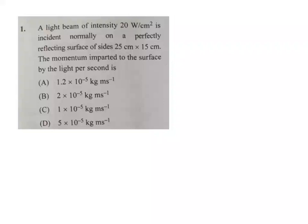Look at the first problem. A light beam of intensity 20 watt per square centimeter is incident normally on a perfectly reflecting surface of size 25 centimeter cross 15 centimeter. The momentum imparted to the surface by the light per second is? So the momentum imparted, delta rho, is equal to two times intensity into area divided by speed of light.